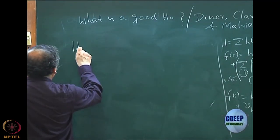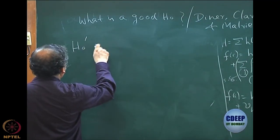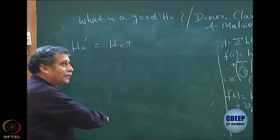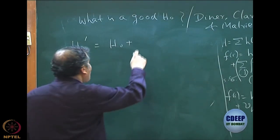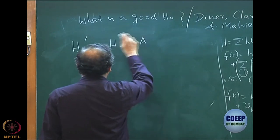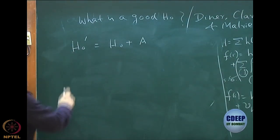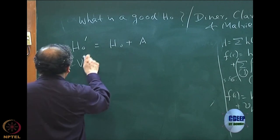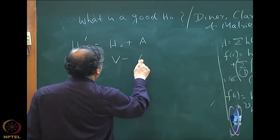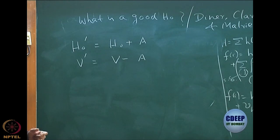If you look very carefully, instead of H0 plus a number, you could add some operator A. This is now an operator, and my V prime will become V minus A. If you take an operator, then everything will change.